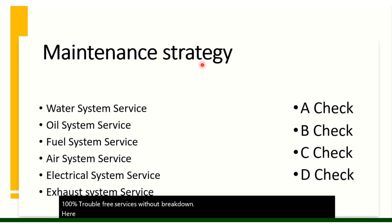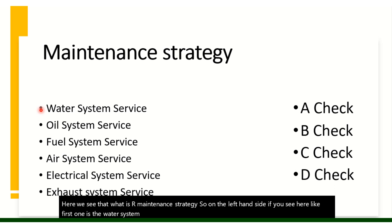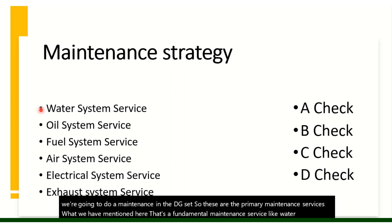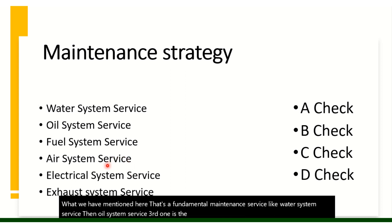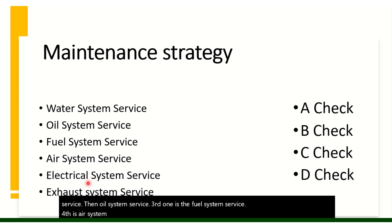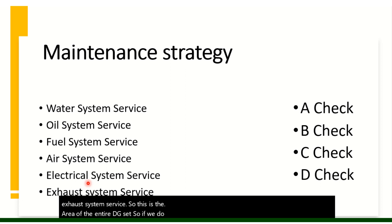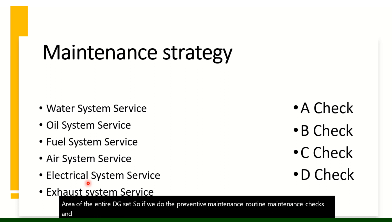Now let's look at the maintenance strategy. On the left-hand side, we see the primary maintenance service areas. The six fundamental services are: water system service, oil system service, fuel system service, air system service, electrical system service, and exhaust system service. These cover the entire DG set. If we perform preventive maintenance checks on all six sections, our maintenance is covered 100%.